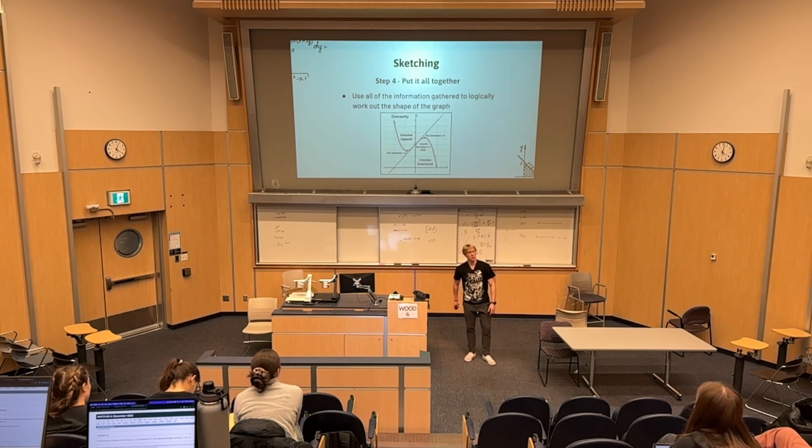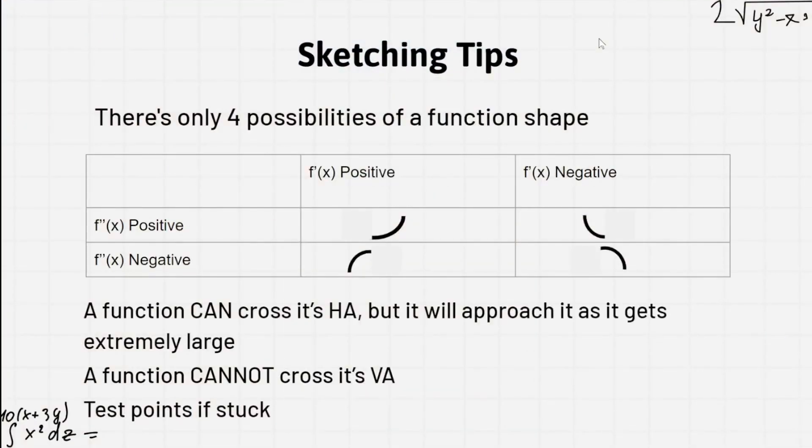Put it all together, everything you know, and attempt to graph the function. This is a table that you can look at. So basically, if you think of a u and an n and cut that in half, those are the four possibilities for what your graph can look like.